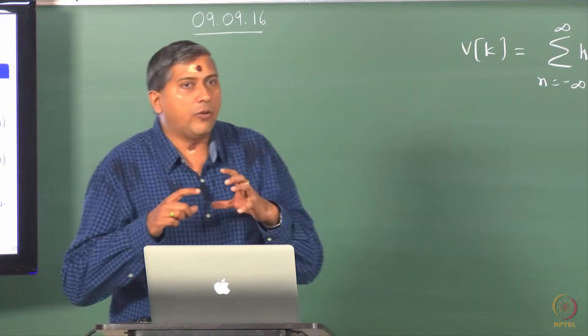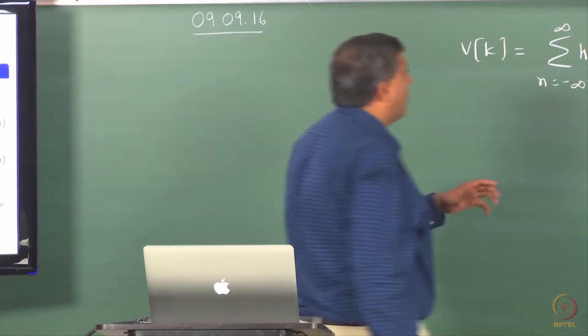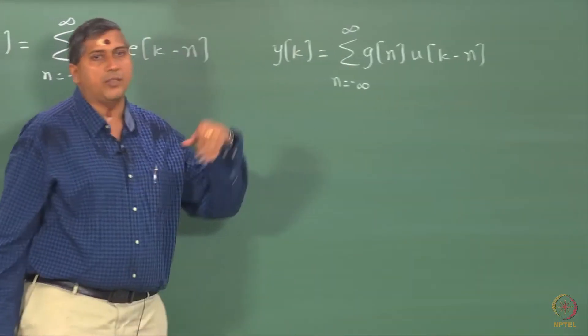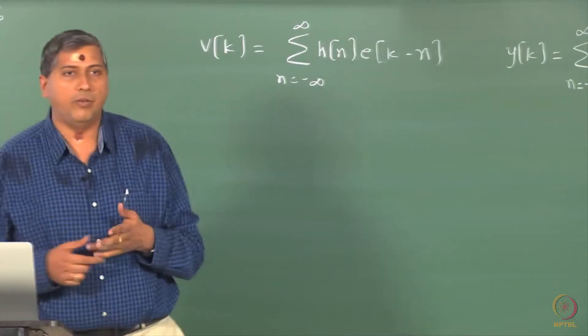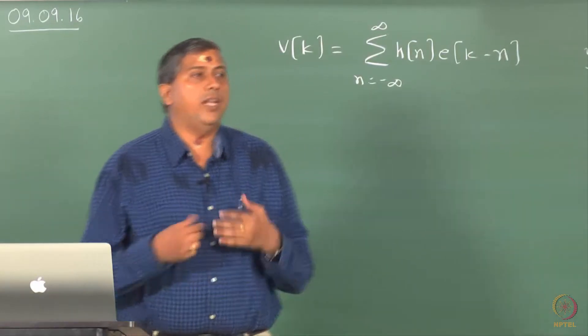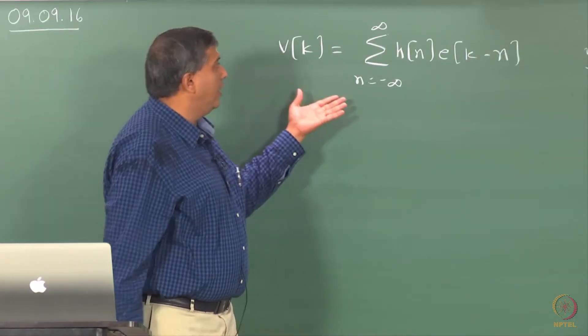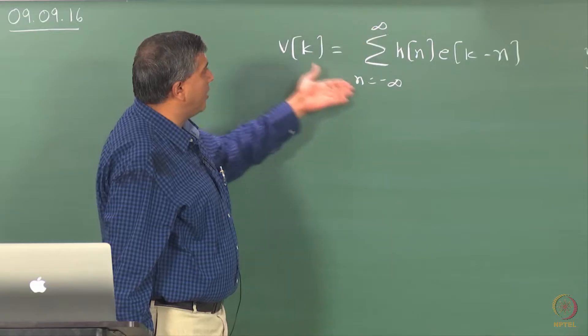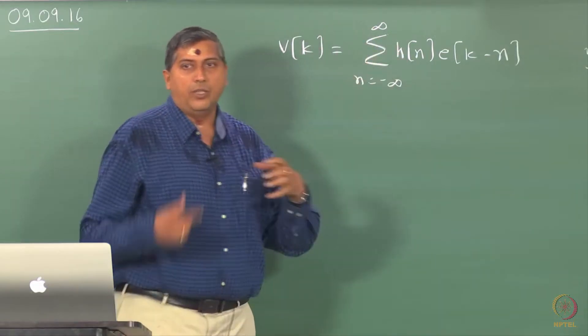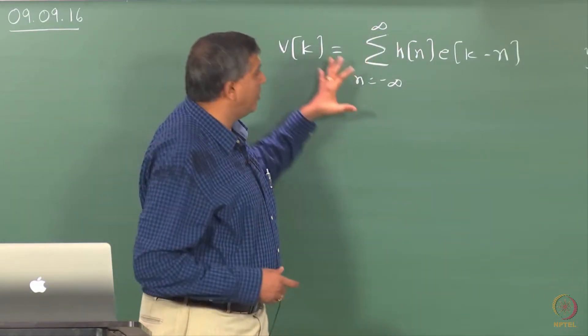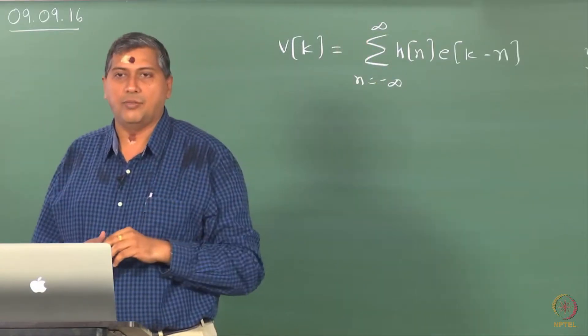But the big difference as I said yesterday is that this convolution equation is derived from the property of linearity and time invariance, whereas very often the definition of a linear random process itself is given in this form. So the definition of a linear random process is tied to this representation itself.